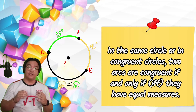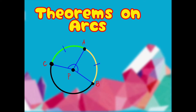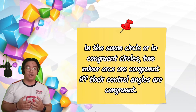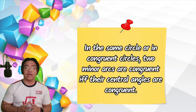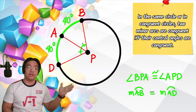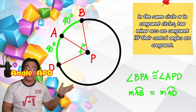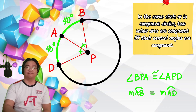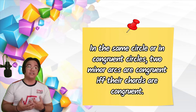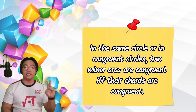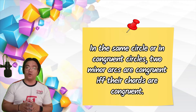Some theorems on arcs: in the same circle or in congruent circles, two minor arcs are congruent if and only if their central angles are congruent. Based on this figure, angle BPA and angle APD are congruent because their arc measures are also congruent. Another theorem: in the same circle or in congruent circles, two minor arcs are congruent if and only if their chords are congruent.